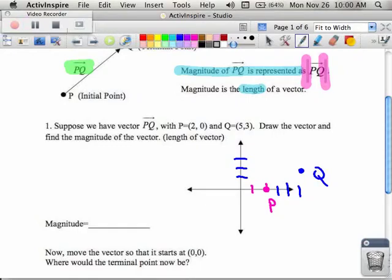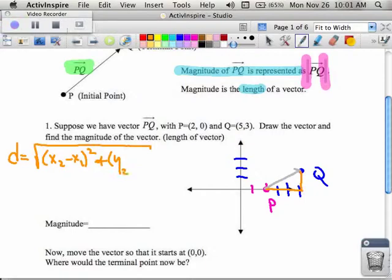The vector that they're talking about is the vector that goes from P to Q. If I wanted to find that, there are numerous different ways that you could do that. One way is you could draw a right triangle and use the Pythagorean theorem. But really, we found out earlier that you're actually using the distance formula that we learned a long time ago. The distance formula said that we took the x2 minus the x1, squared it, and then added that on to the y2 minus the y1, squared, and took the square root.